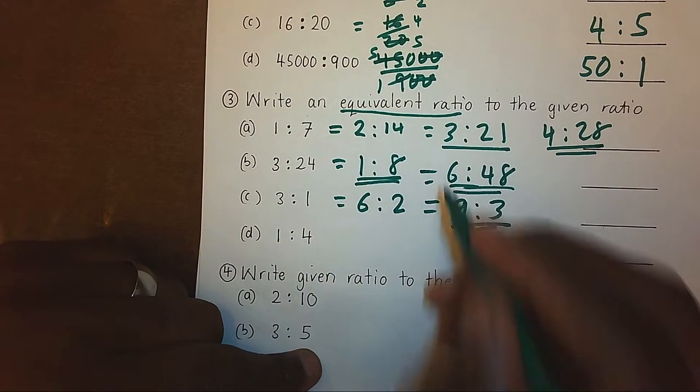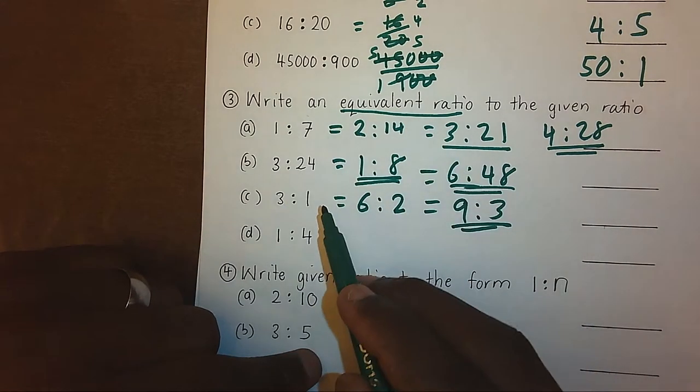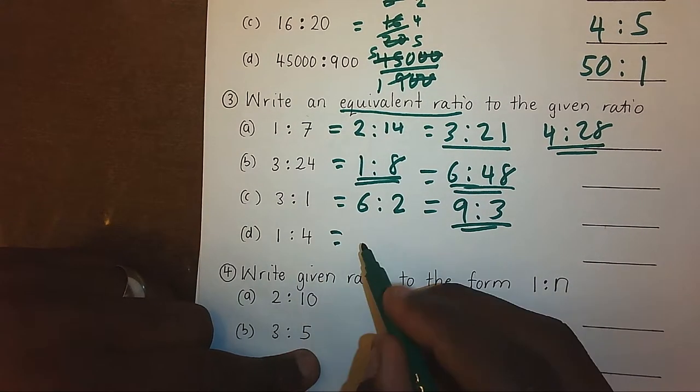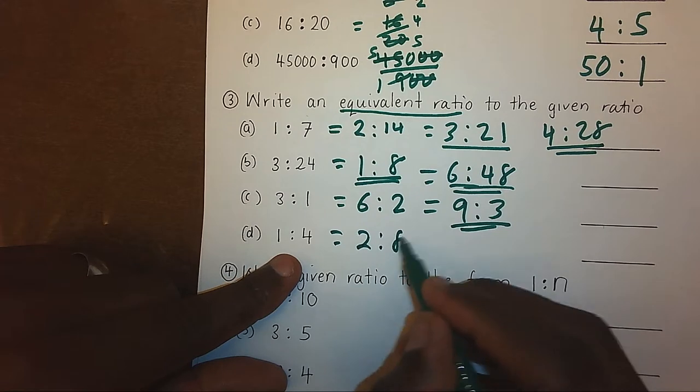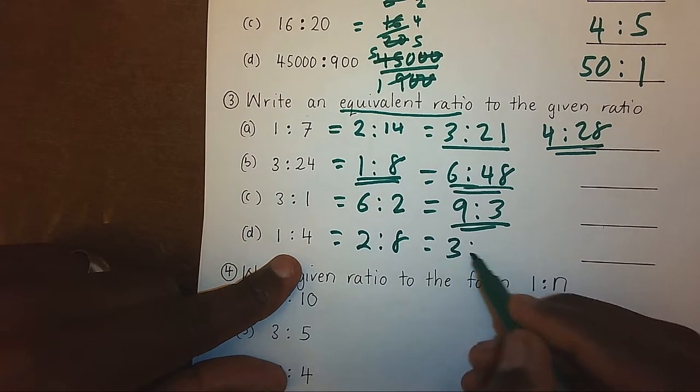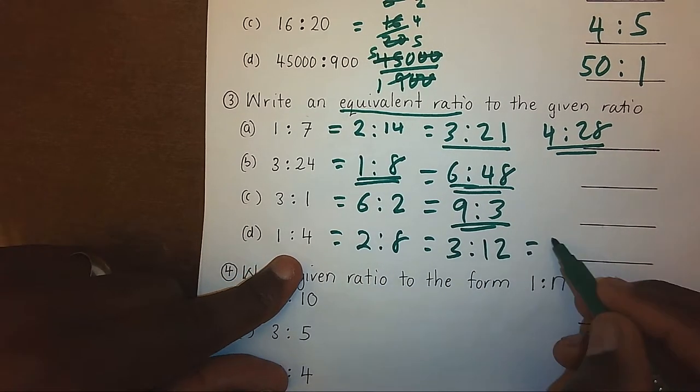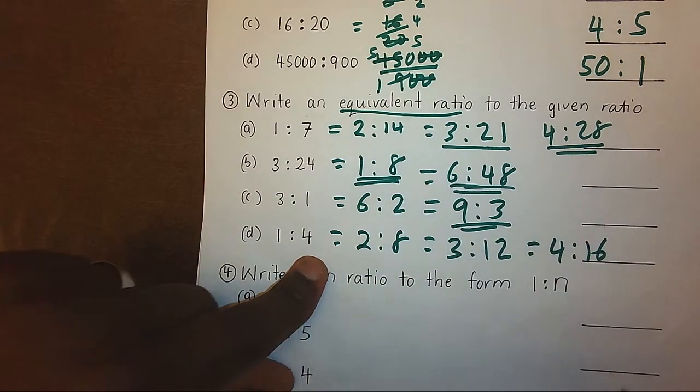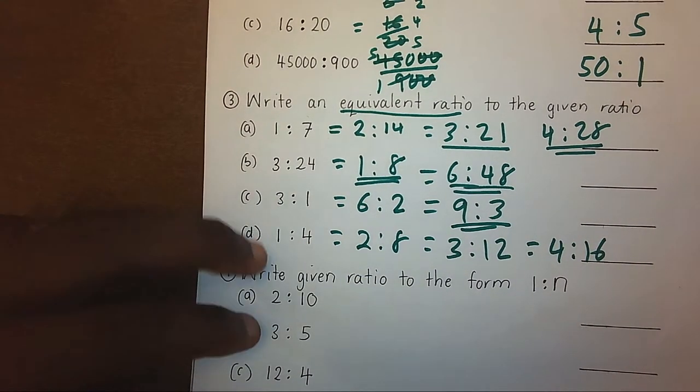This means in this section of equivalent ratios, we can have so many other ratios. Last one here, we have 2 ratio 8, we can have 3 ratio 12, we can have 4 ratio 16, and so on. That is about equivalent ratios.